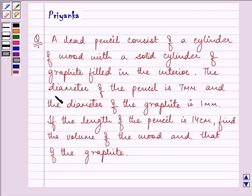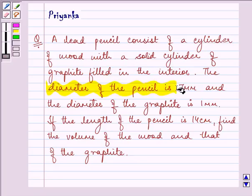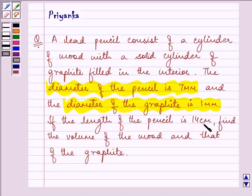The diameter of the pencil is 7 mm and the diameter of the graphite is 1 mm. If the length of the pencil is 14 cm, find the volume of the wood and that of the graphite.